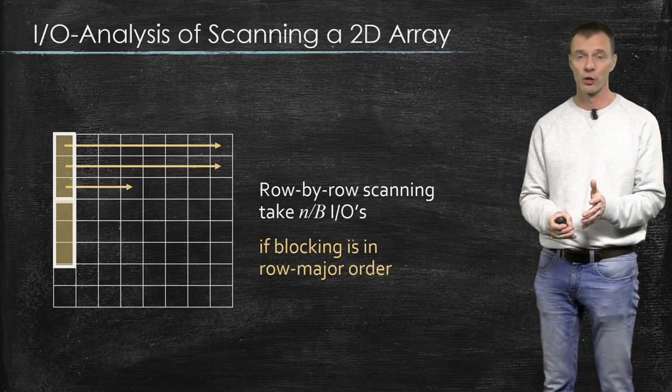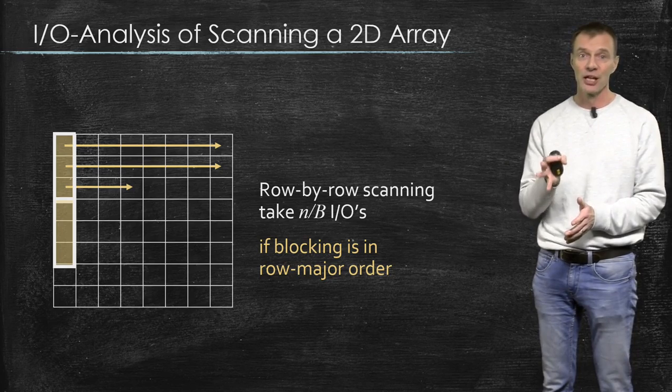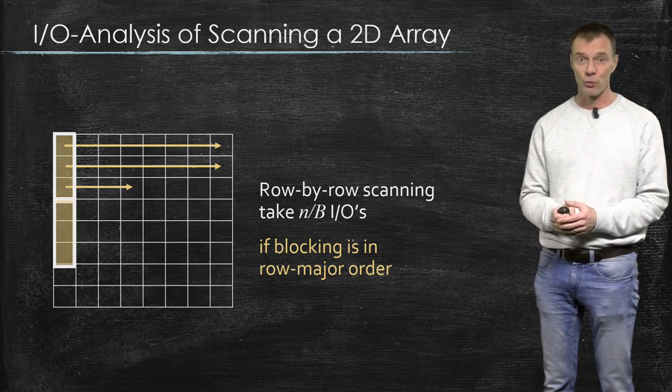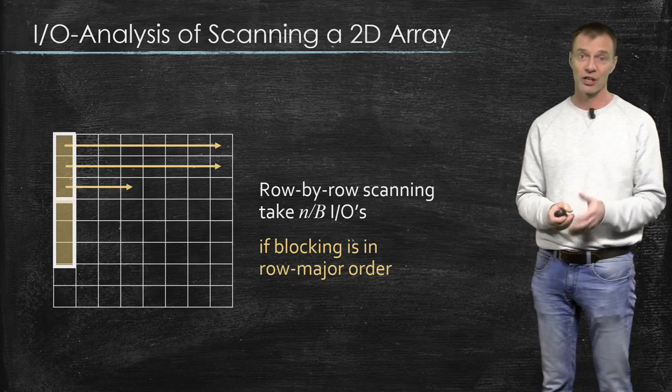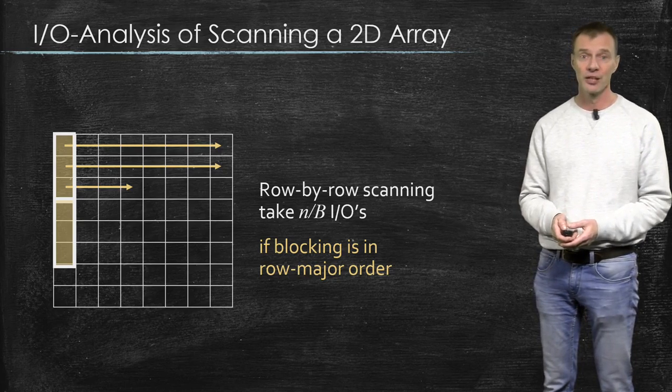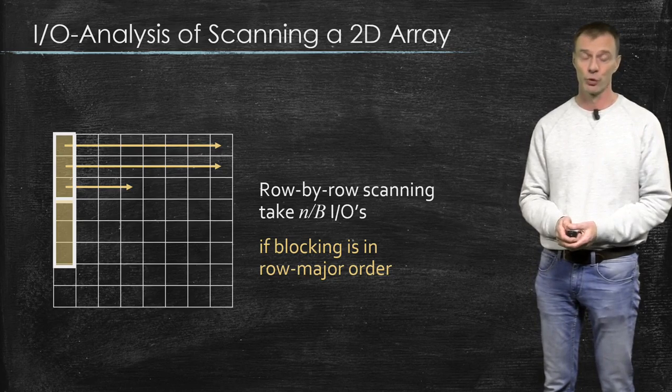A column-by-column algorithm is bad if the data is stored row-by-row, but if the data is stored column-by-column, then a row-by-row algorithm would be bad.